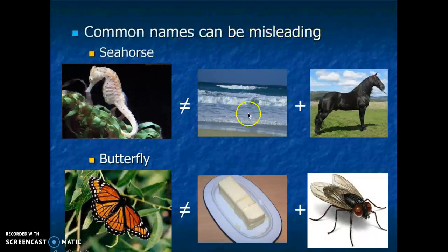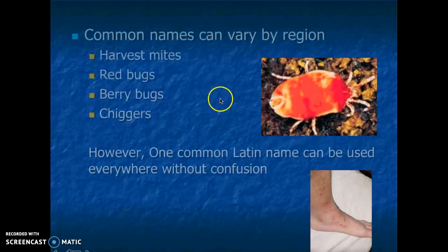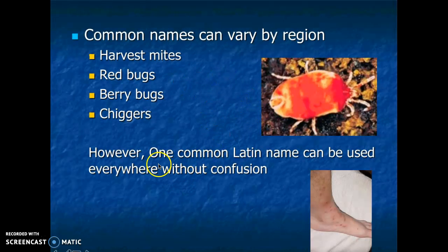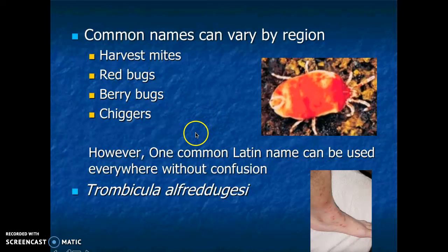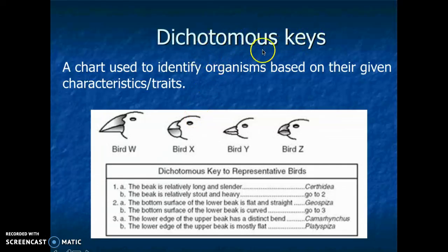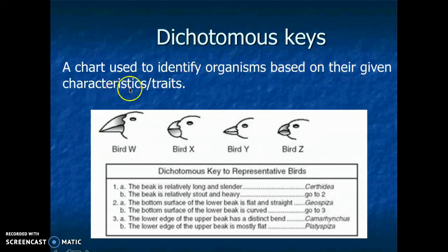Common names can be very misleading — like seahorse, combining sea and horse, or butterfly, combining butter and fly. It's better to use a scientific name for organisms. A dichotomous key is basically a chart used to identify organisms based on their given characteristics or traits. I'm going to show you a separate video that will go over how to read a dichotomous key. I'll go ahead and stop this one here and I'll see you in the next one.